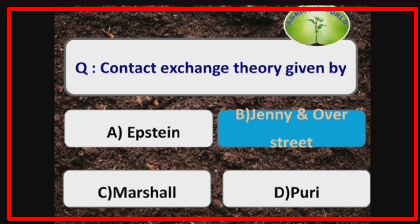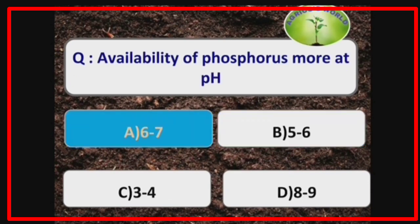Contact exchange theory was given by Jenny and Overstreet. Availability of phosphorus is more at pH 6–7, and it decreases upon increasing the pH.